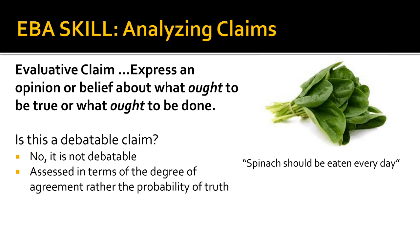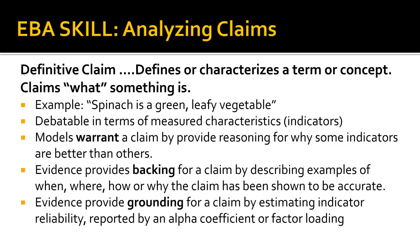Let's now move on to the next type of claim: a definitive claim. A definitive claim defines a concept by specifying what characteristics, dimensions, or attributes are indicators that the concept is present in the current situation. Concepts proposed in a designative or advocative claim are referred to as factors — a cause or an outcome. From here forward we will refer to the concept definition created by a definitive claim as the factor definition.